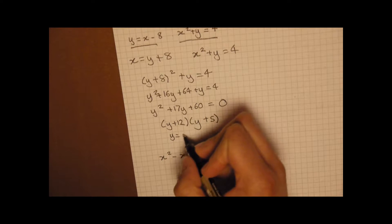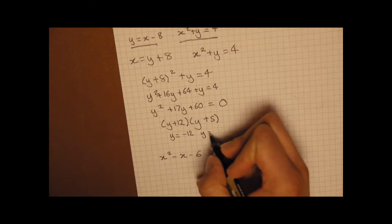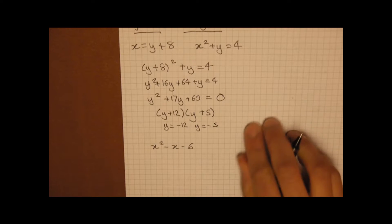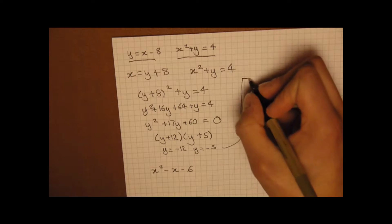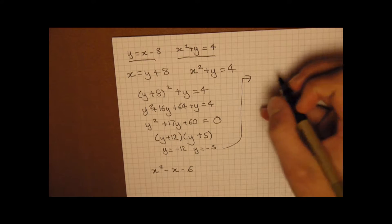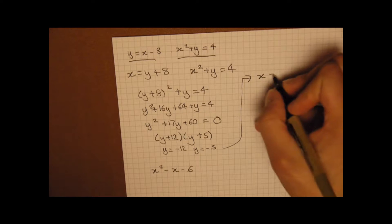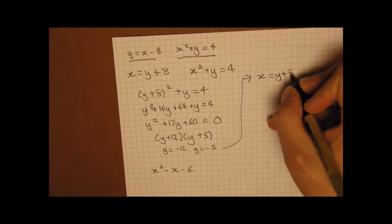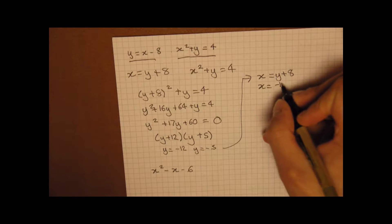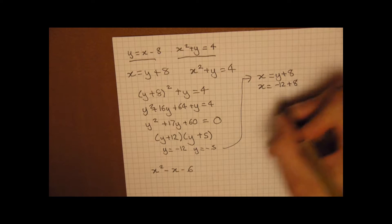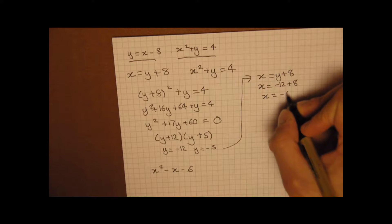So therefore we know that y is now minus 12 and y equals minus 5. So we're just going to move this up here, and we're going to take our original equation. So we know that x equals y plus 8. So therefore x must be equal to minus 12 plus 8. x equals minus 4.